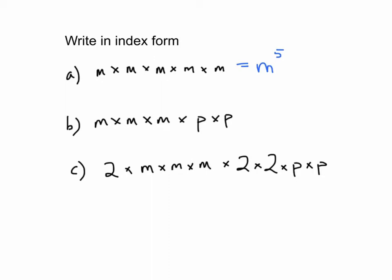Now here you've got two bases, you've got m to the power of something and p to the power of something. So if we follow what we did before, we've got m to the power of 3 times p to the power of 2. Now the hint is that with algebra we don't usually write the multiplication in when they're separating letters. So we write m cubed p squared.